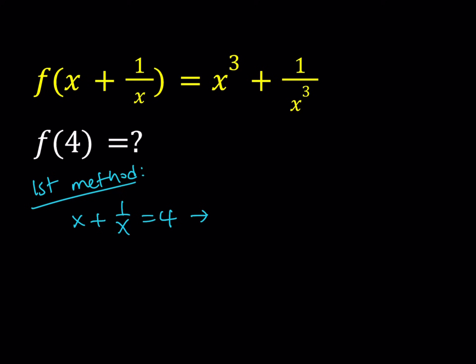Multiply everything by x - obviously x does not equal 0, we know that. So that's going to give me x squared plus 1 equals 4x. And then if I put everything on the same side, I get x squared minus 4x plus 1 equals 0.